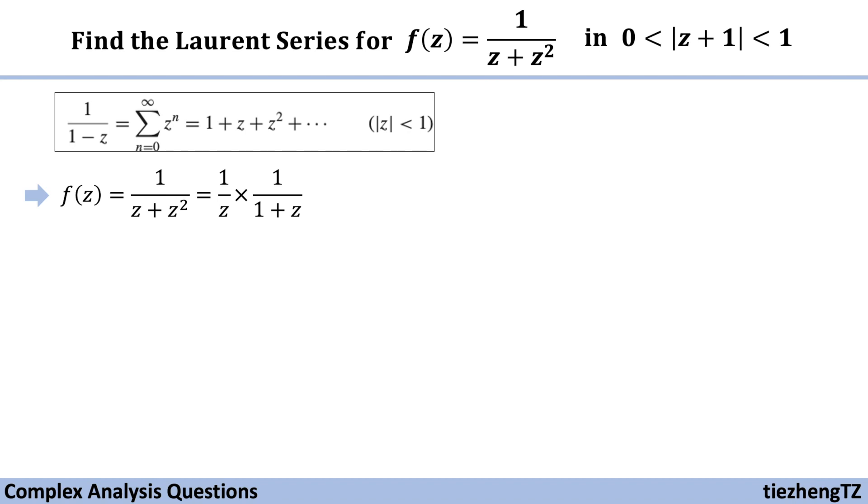So now we are going to do something with the 1 over z. I change the 1 over z into minus 1 over 1 minus (z plus 1). So now we can have 1 minus (z plus 1) in the denominator part.